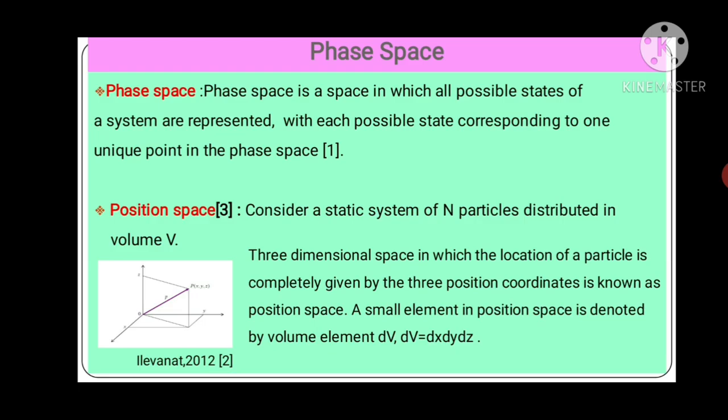First we will see what is Position Space, then we will see what is Momentum Space. First see Position Space. Consider a static system of N particles distributed in volume V. You know position of particle in three-dimensional space is specified by Cartesian coordinate system. As shown in figure, see in this figure, P particle is shown. It has coordinates x, y, z.